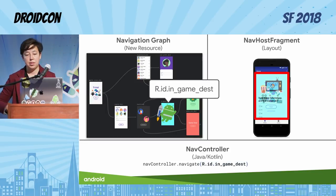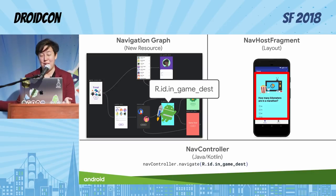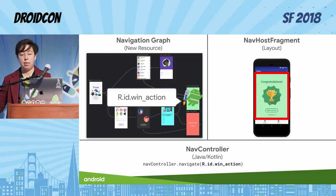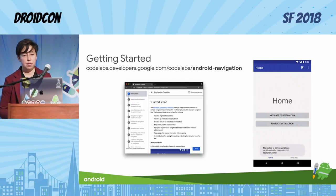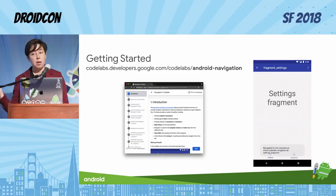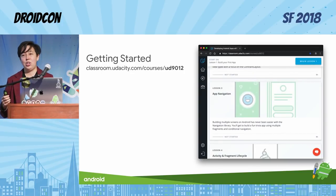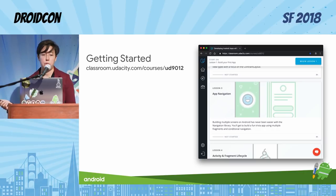When I want to navigate from one destination to another, I use my nav controller. The simplest way is to call the navigate command and pass in an ID referencing a specific destination or action. If I pass in an ID for a destination, it's kind of like a go-to statement. A safer way is to give it an ID for an action, in which case it'll follow the path of that action. For more detail, there's a codelab, and we just launched the first four lessons of the new Developing Android Apps with Kotlin Udacity course — the third lesson is all about navigation.